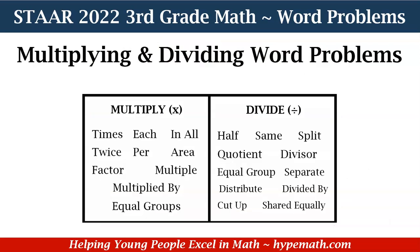Now, let's look at some words that may alert us when we are reading a word problem that we may need to multiply or divide. Let's start with multiplication. They are: times, each, and all, twice, per, area, factor, multiple, multiplied by, and equal groups.